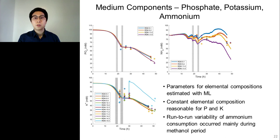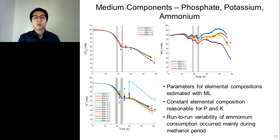The plots on this slide show a comparison of model predictions with data on concentration of medium components. For phosphate and ammonium, only data with low pH conditions were used because of precipitation at higher pH conditions. Parameters for elemental compositions were estimated with maximum likelihood method, and estimated values reasonably agree with values from the literature. Phosphate and potassium data are well described by the macroscopic model, demonstrating that constant elemental composition is a reasonable assumption. On the other hand, ammonium data have more run-to-run variability compared to other medium components, occurring mainly during the methanol period when intracellular nitrogen concentration increased due to recombinant protein production.